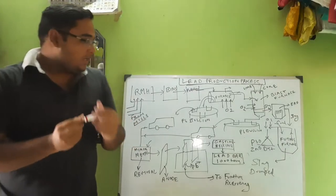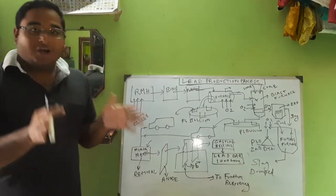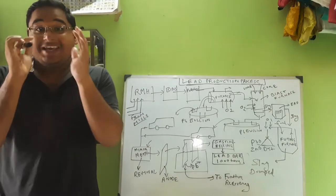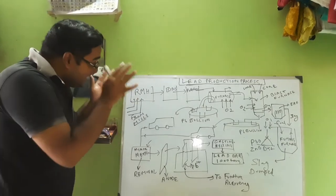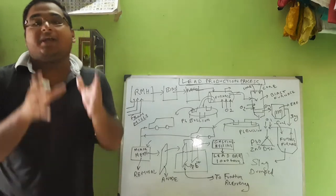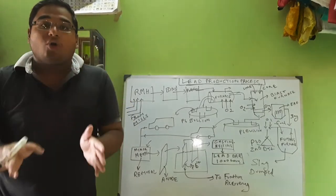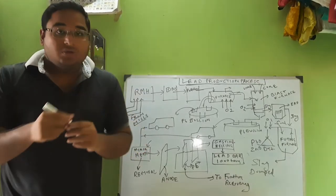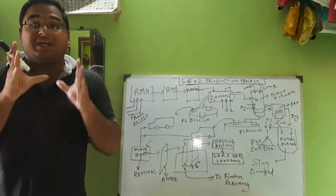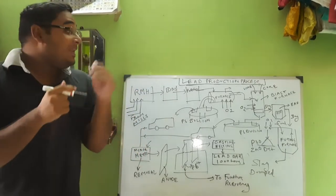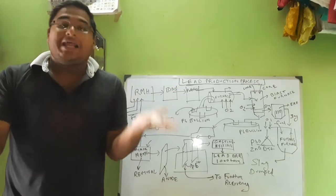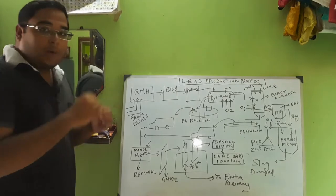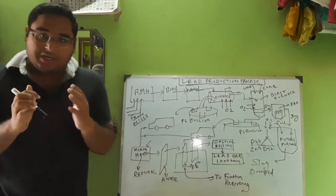Hello everyone, welcome to today's video. Do not be confused by seeing such a big diagram. First of all, let me give you a heads up. This is an easy diagram. It seems to be complicated, but it is one of the most important and prominent industrial processes right now — the lead manufacturing process, or specifically the lead smelting or lead production process. Today we are going to talk about the lead smelting process in particular.